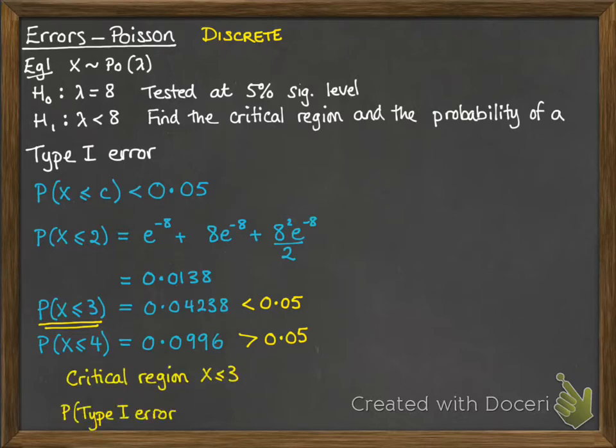So the probability of a type 1 error, that means that the null hypothesis was rejected when it was actually true. So that's the probability that x could be less than or equal to 3 on this null hypothesis. So it's that value there. So it's a 4.2% significance level.